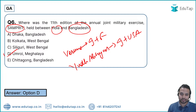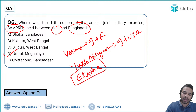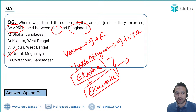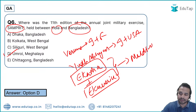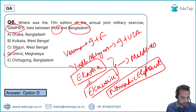Bonus question: With which country does India conduct the Ikartha and Aquvarin exercises? The right answer is Maldives. Another exercise — Nomadic Elephant — is a homework question for everyone: find out between which two countries it is conducted and tell me in the comments section after the session.